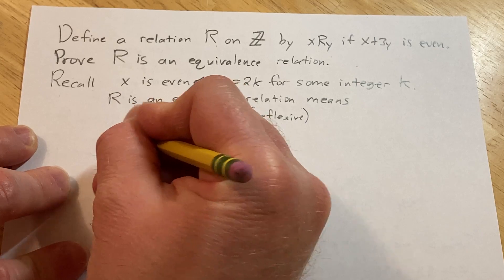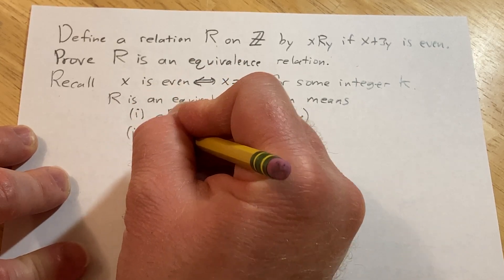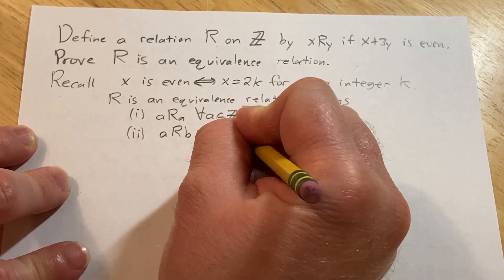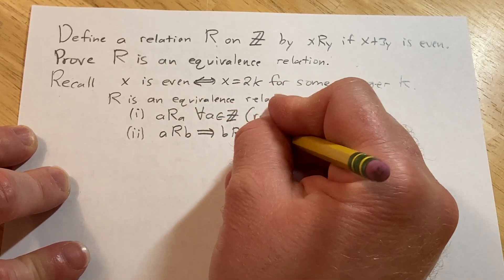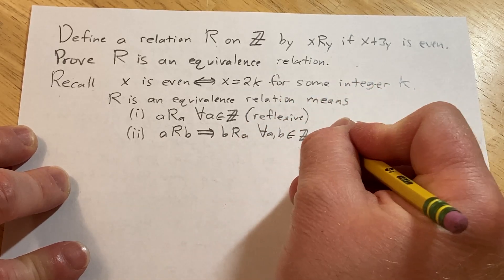Two, the next one is symmetry. It basically says if a is related to b, then b is related to a, and this has to hold for all a, b in Z. This is called symmetry.